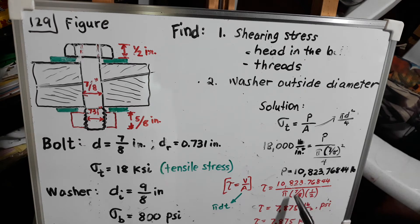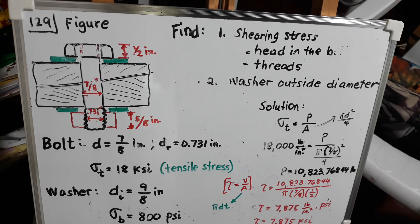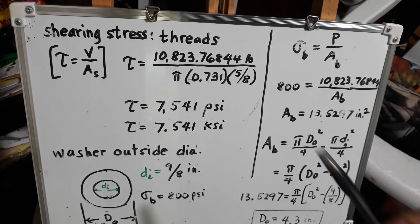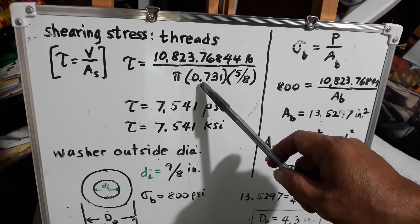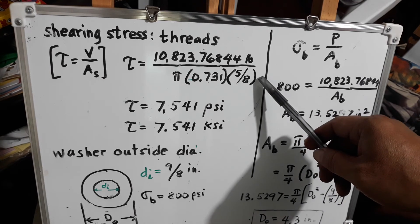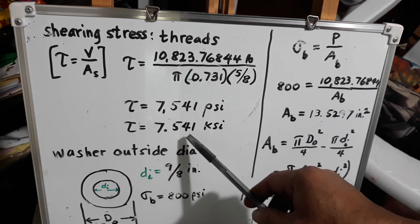Computing that gives a shearing stress in the head of the bolt of 7.875 KSI. For the threads, the same formula is used, but the shearing area differs because the diameter at the root is 0.731 inches and the thickness of the nut is 5/8 inch. The shearing stress at the threads of the bolt is 7.541 KSI.